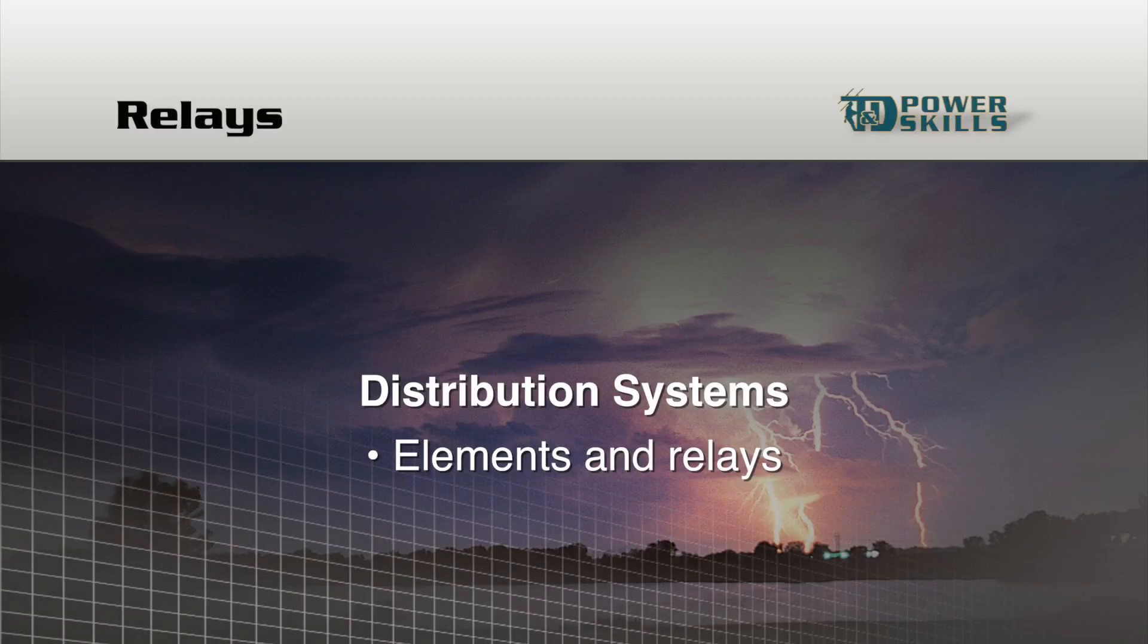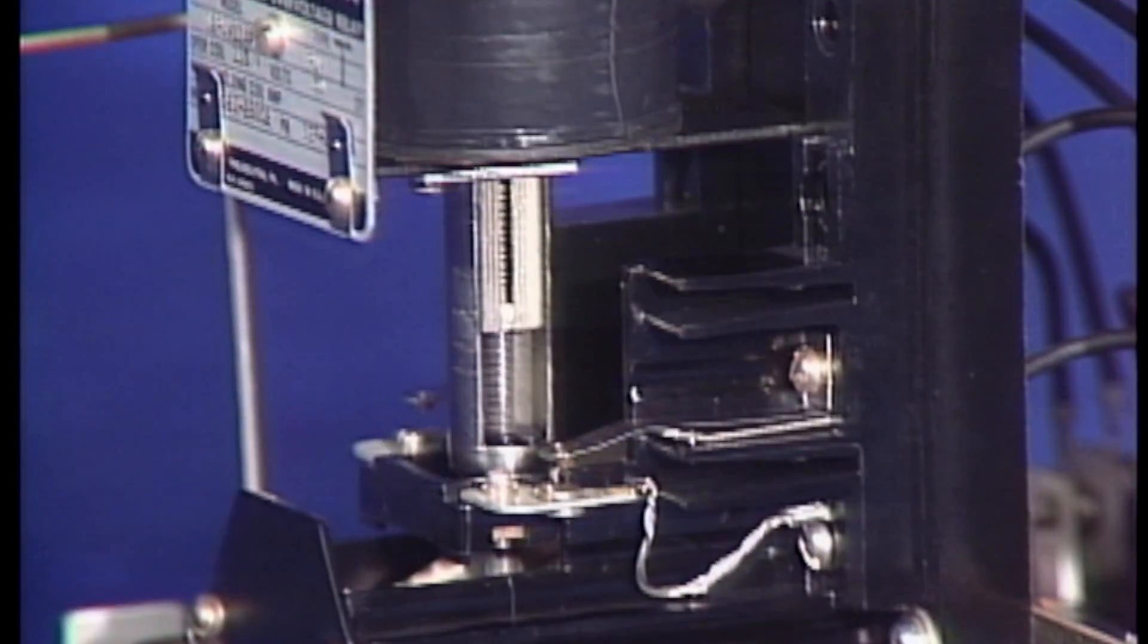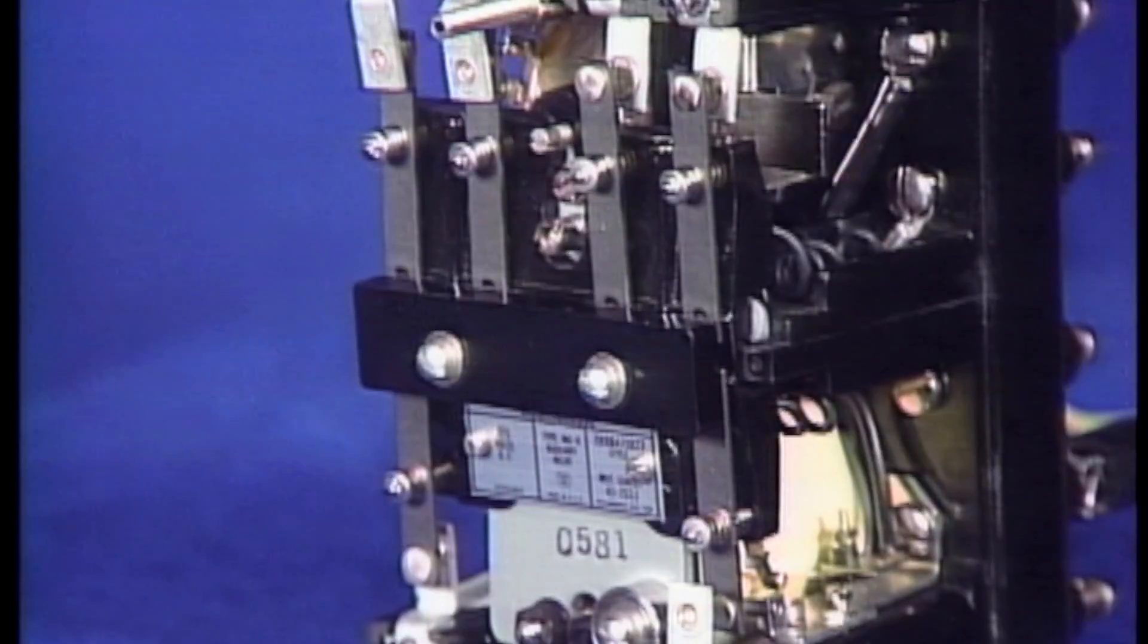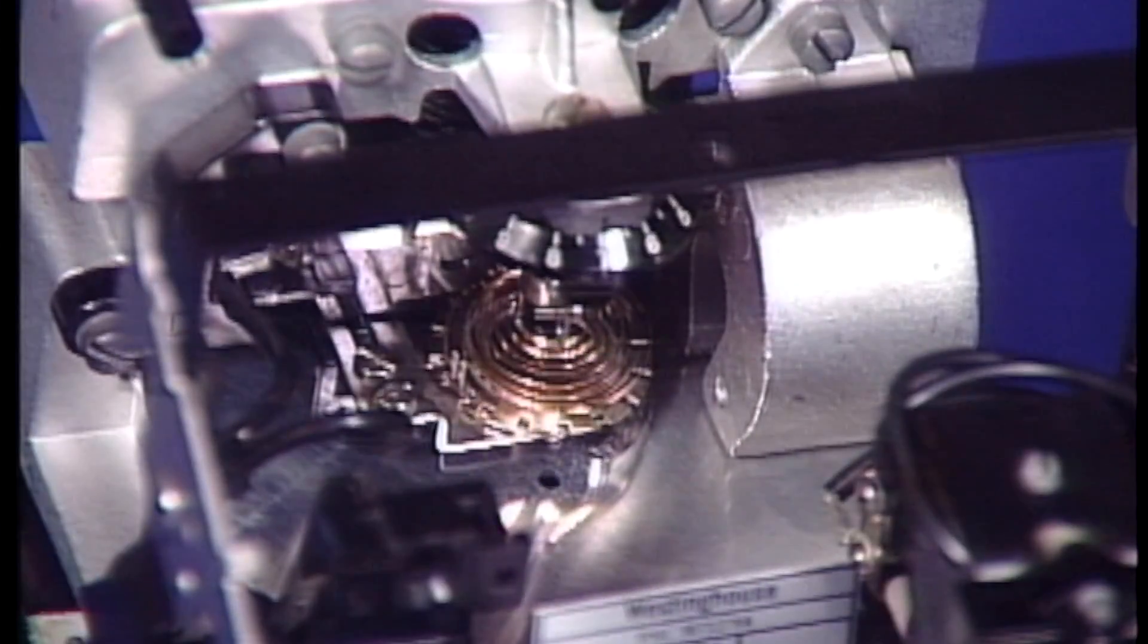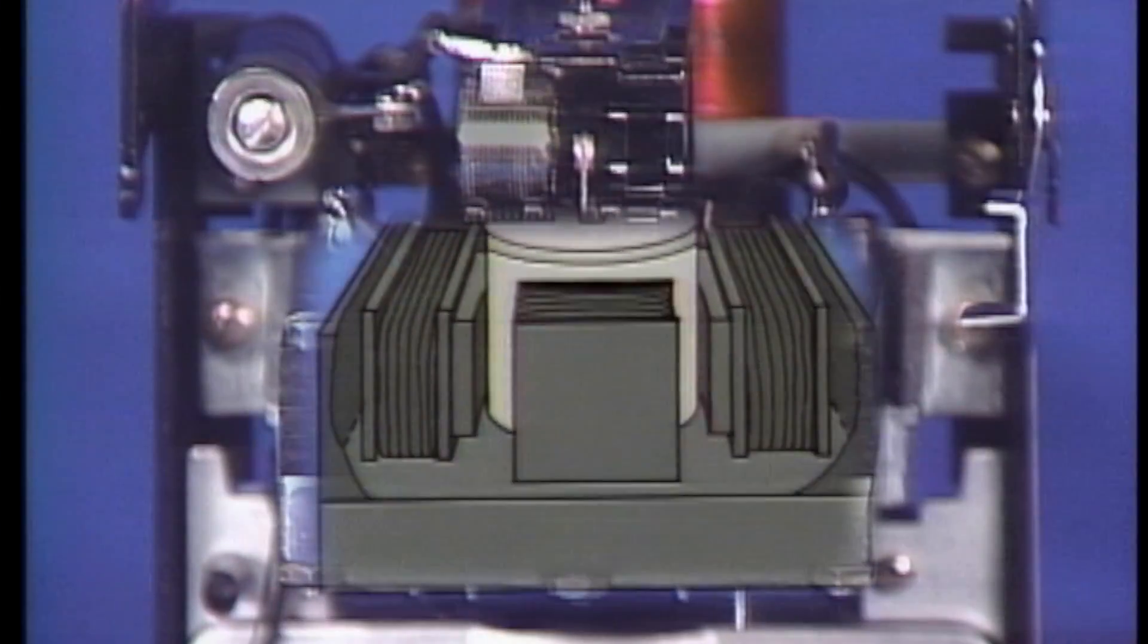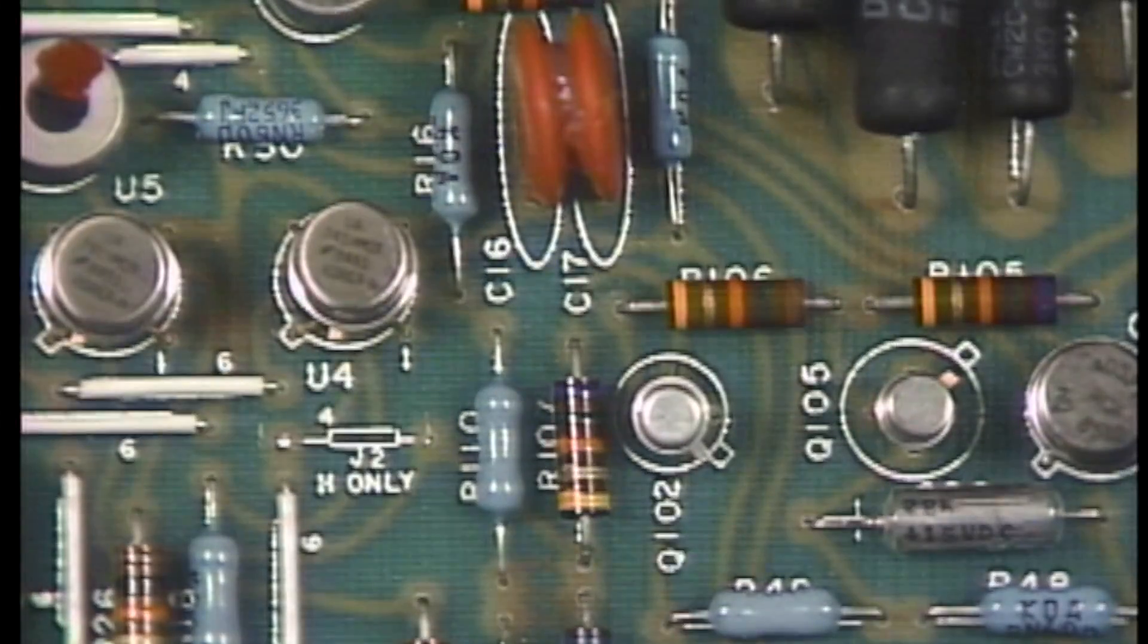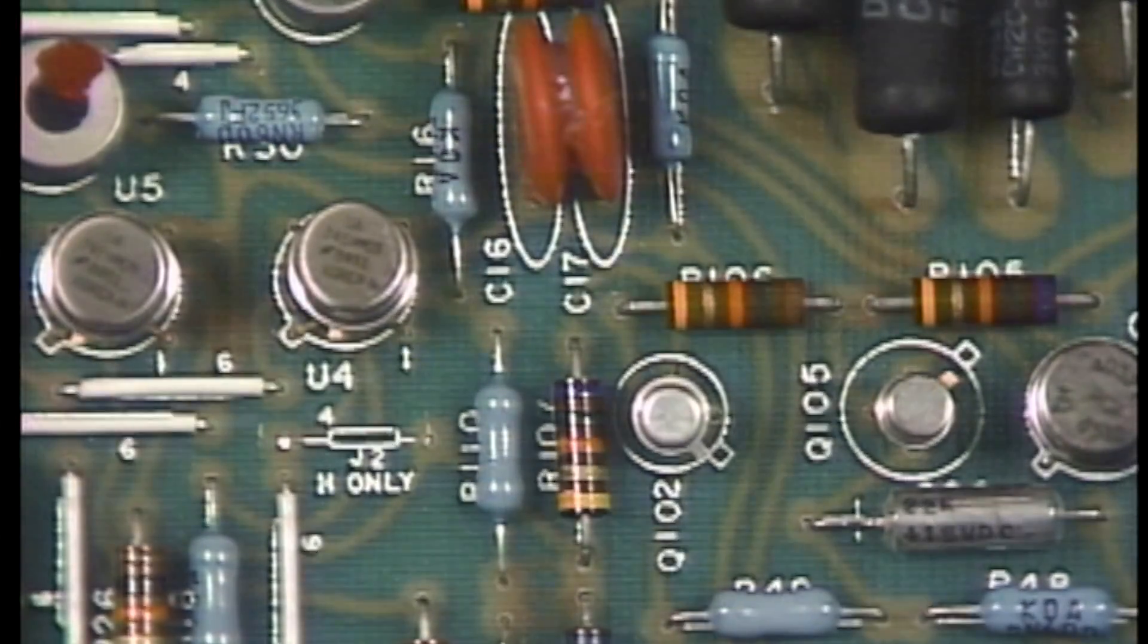In general, a relay can use any of five different elements. These include a plunger element, a clapper element, an induction disc element, an induction cup element, and solid state circuitry, or a combination of these elements.